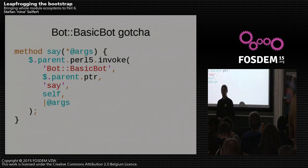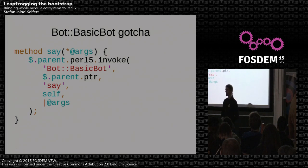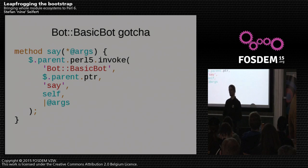Here we find our old friend, the invoke method again. This is just copy and paste from the Perl5::Parent role — this is what it does when you call a method and it has to delegate.